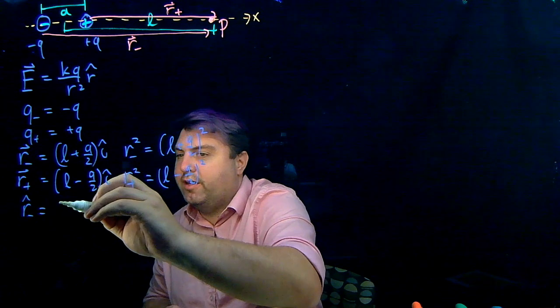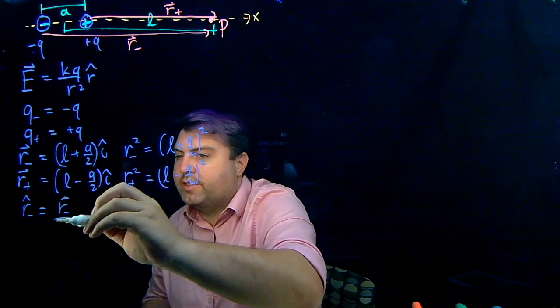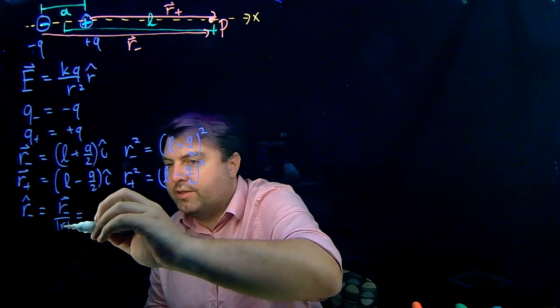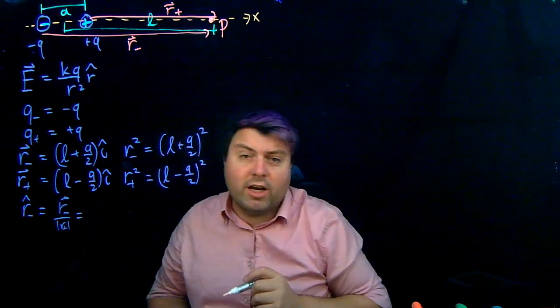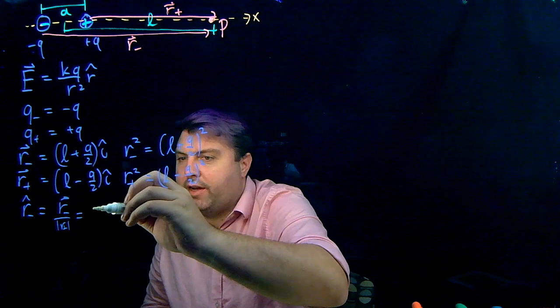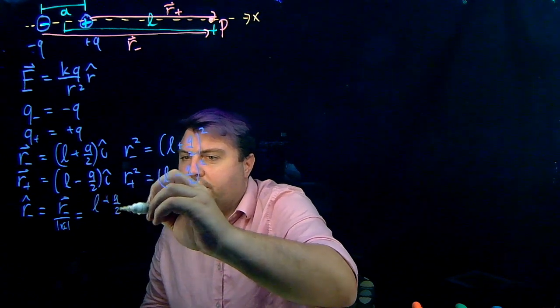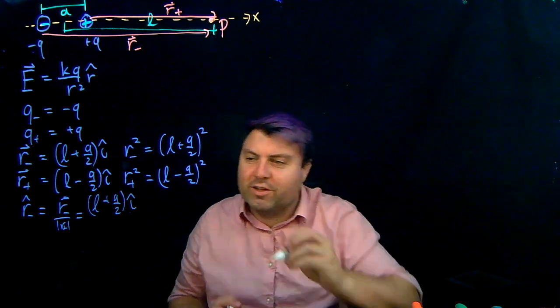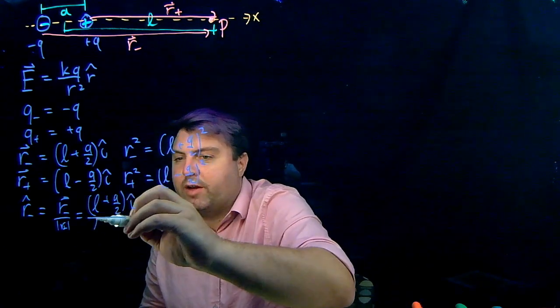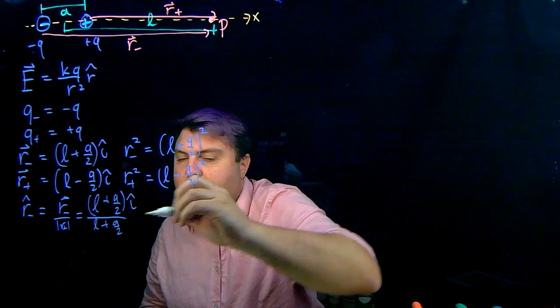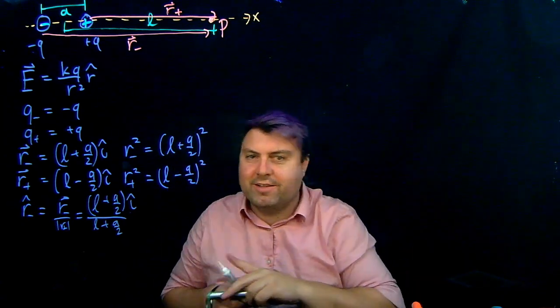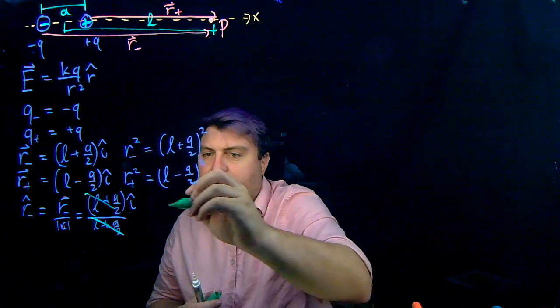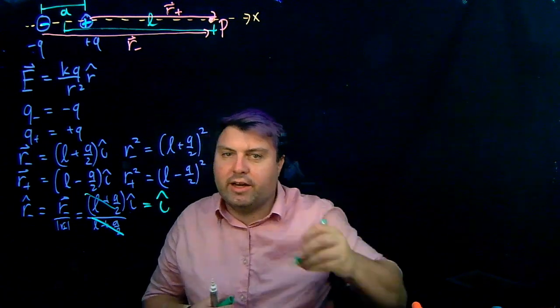R hat's really easy. So we just take R vector minus and we divide by the magnitude of R minus. So because we found it, we can just write it. If we didn't find it, then we'd have to find it in some way or somehow. L plus A over 2 I hat divided by L plus A over 2. And we, of course, get some pretty nice easy cancellations here. We just get equals to I hat.